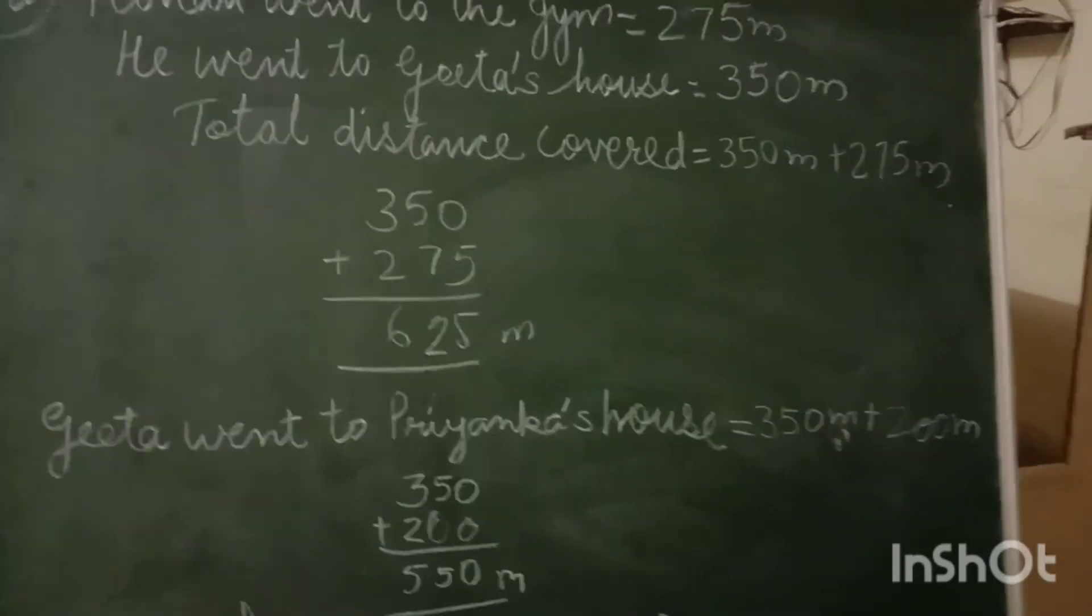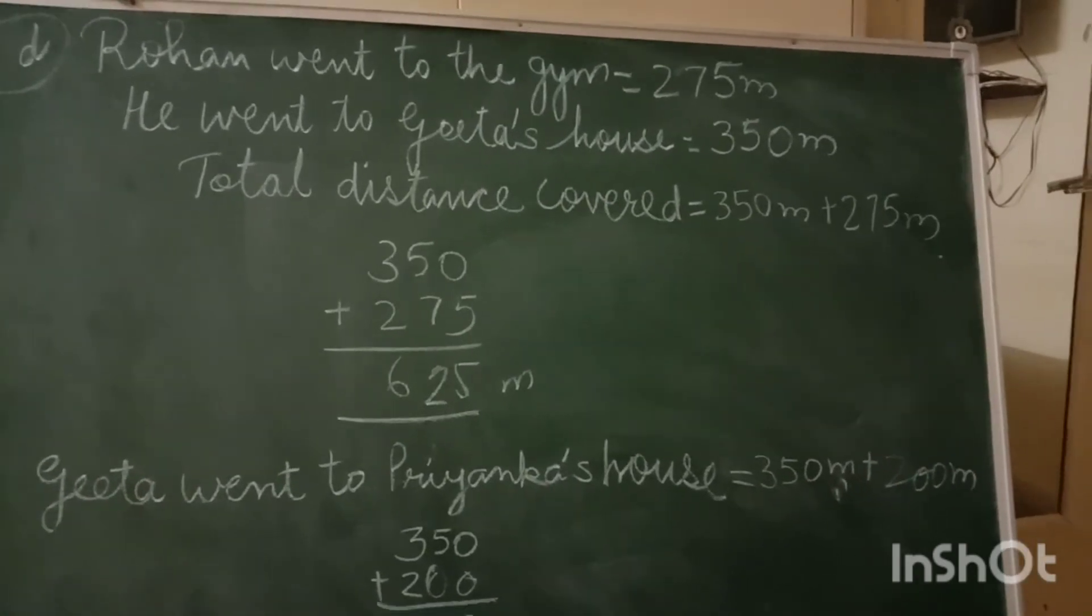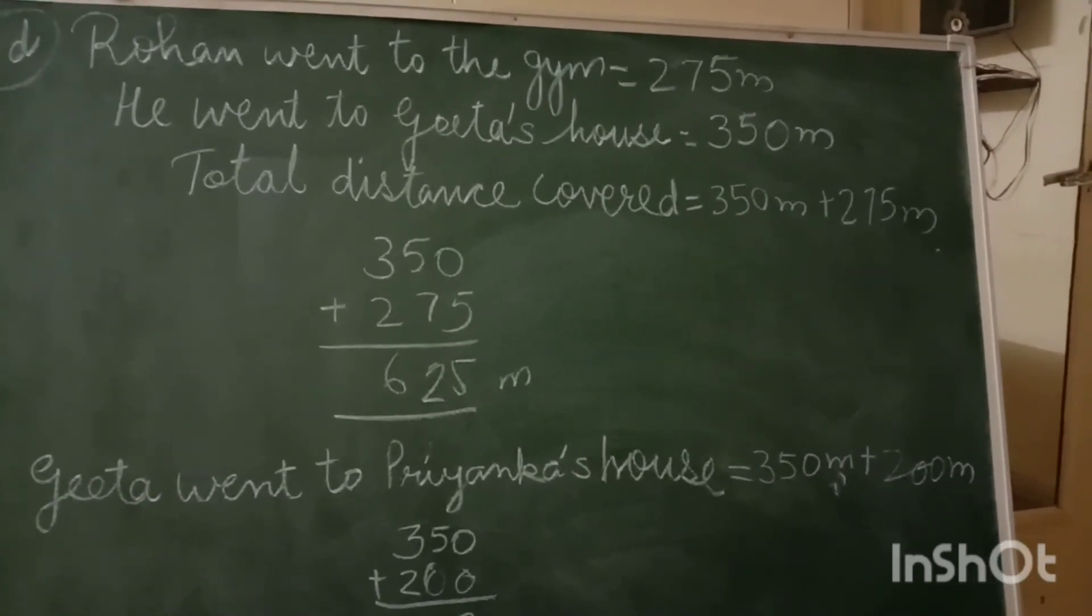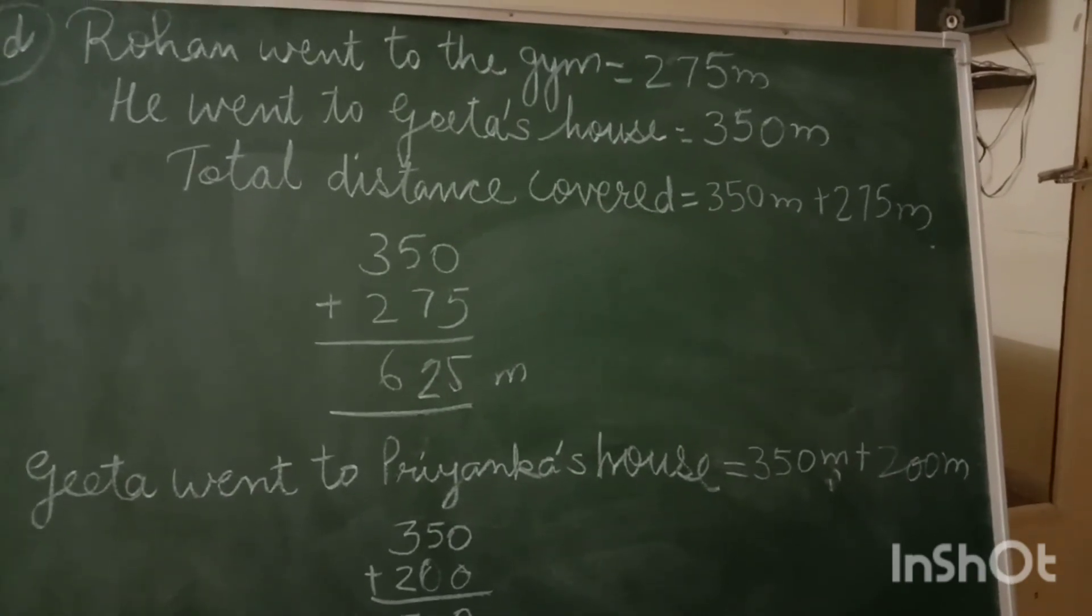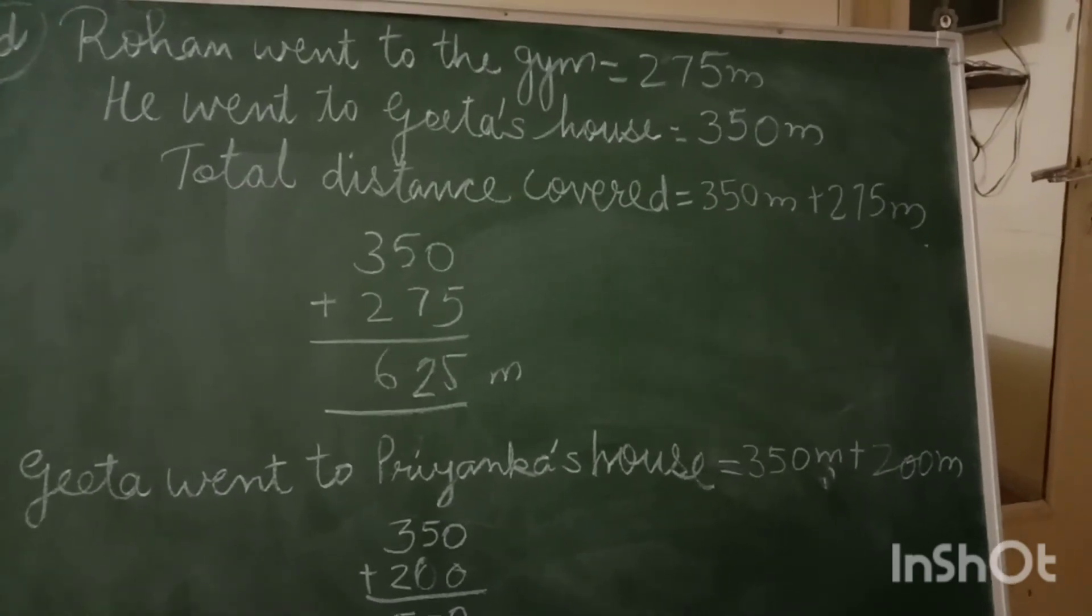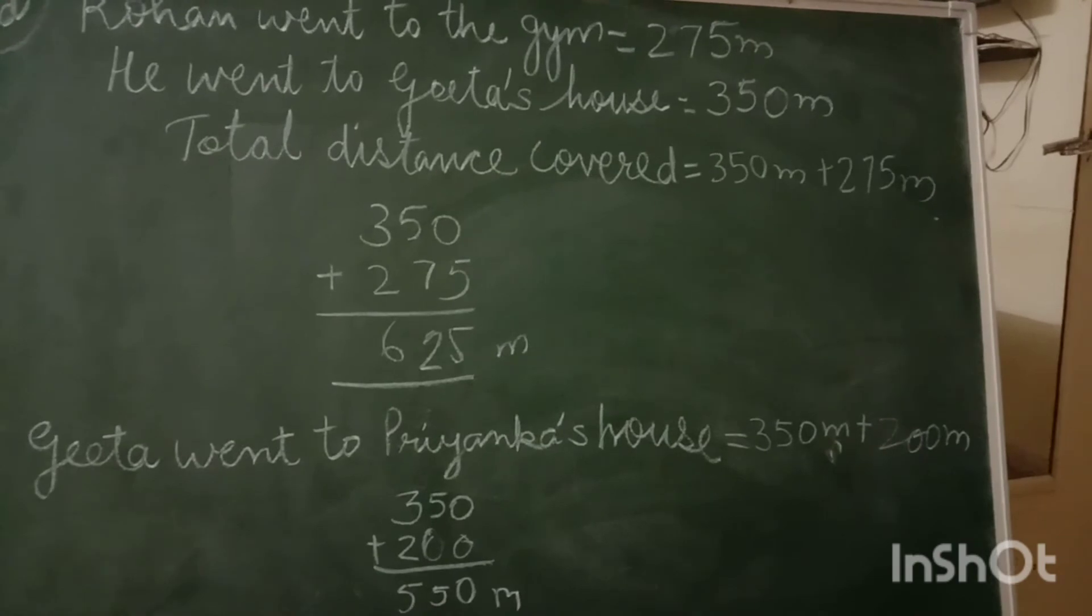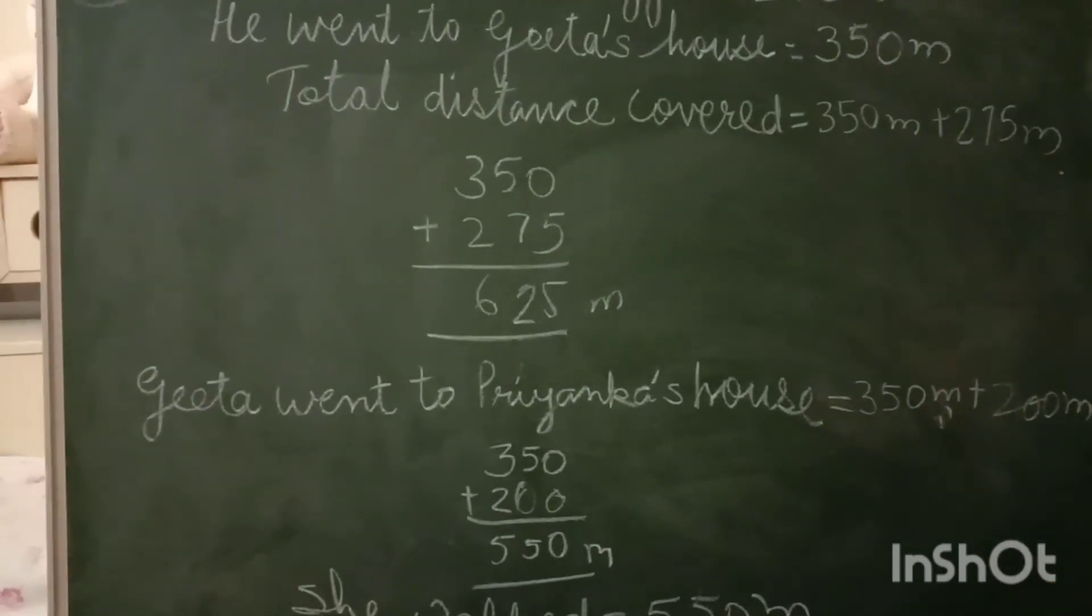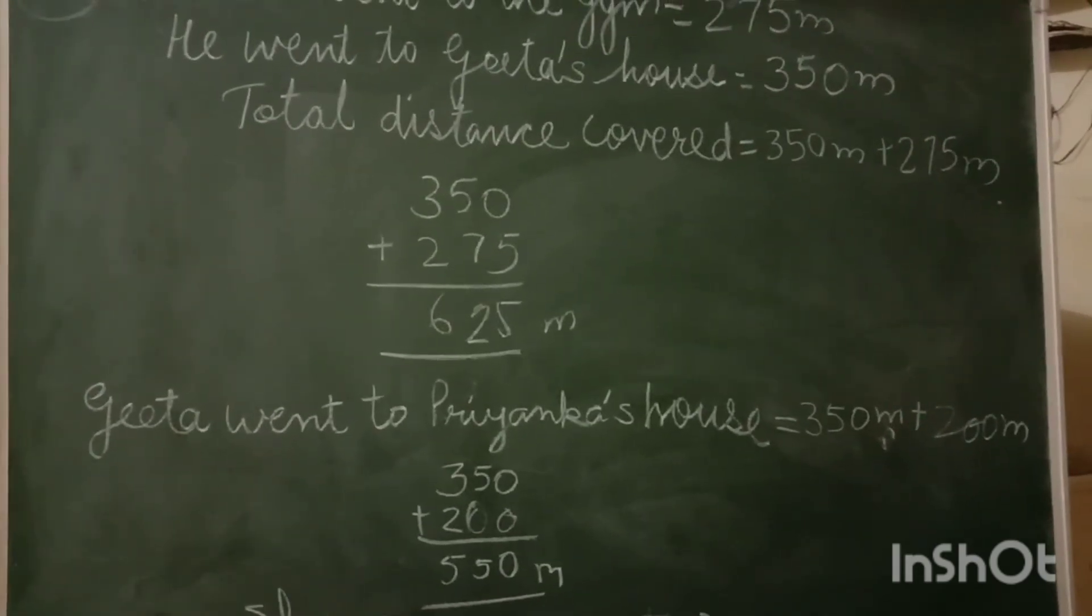Solution: First part, Rohan went to the gym is equal to 275 meters. Then he went to Geeta's house, 350 meters. Total distance covered, it means you have to add. So I have done the addition.